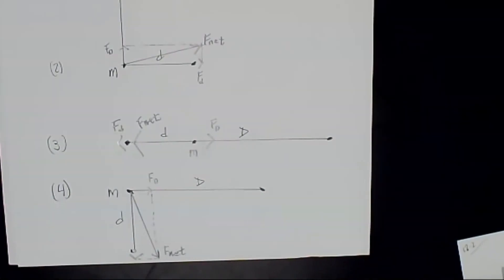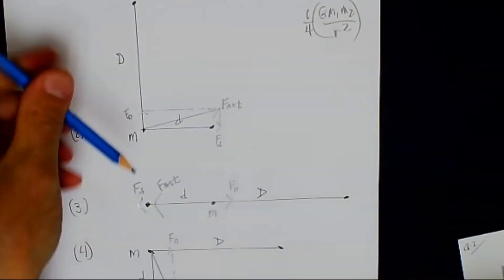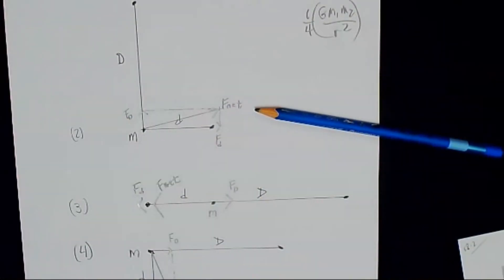Then it asks, in arrangement two, is the direction of the net force closer to the line of length d, or little d,